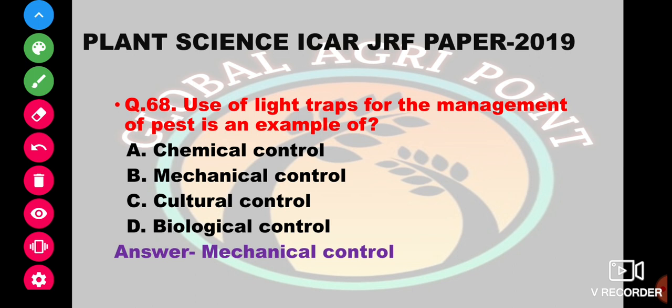Use of light traps for management of pests is an example of chemical control, mechanical control, cultural control, or biological control. The answer is mechanical control.